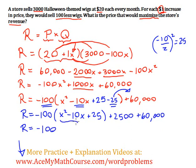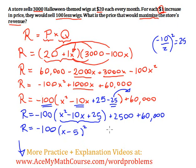The purpose of adding the 25 was so we can factor. X squared minus 10X plus 25 is just (X minus 5) squared — you can confirm by expanding (X minus 5)(X minus 5) to get X squared minus 10X plus 25. And 2,500 plus 60,000 is 62,500. So now we have completed the square.